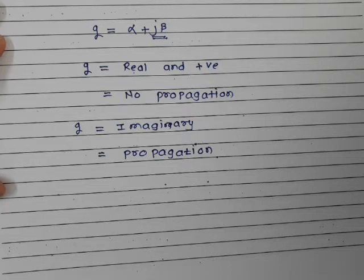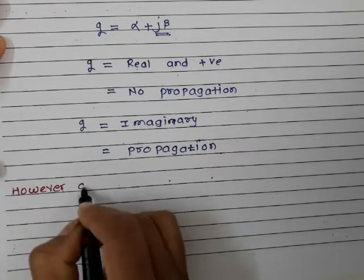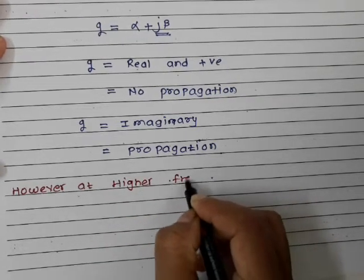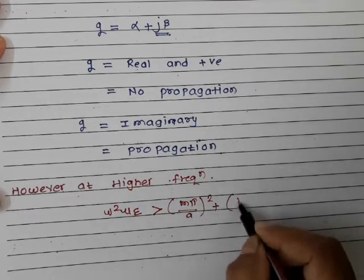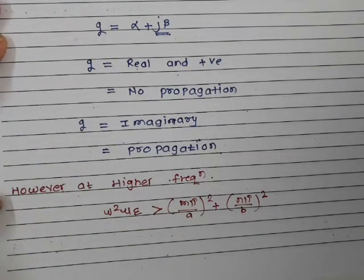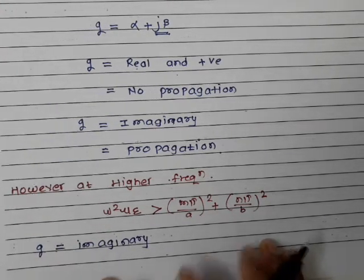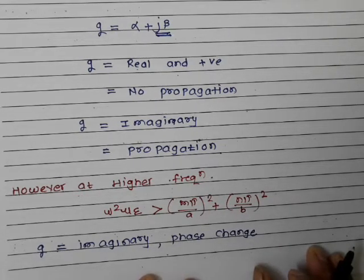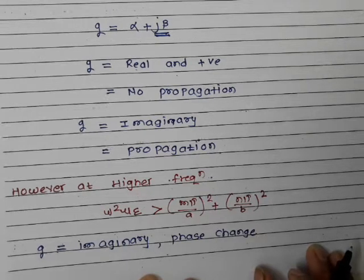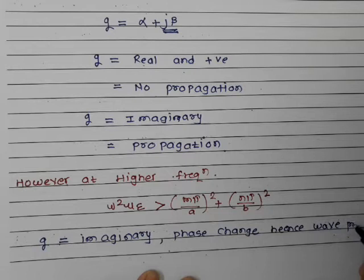Now we'll consider the condition where frequencies are higher. At higher frequencies, ω²με will be greater than (mπ/a)² + (nπ/b)². In this case, gamma becomes imaginary. If gamma is imaginary, there will be a phase change — beta is the phase constant, alpha is the attenuation constant — and if there is a phase change, wave propagation occurs. So wave propagation will be there.